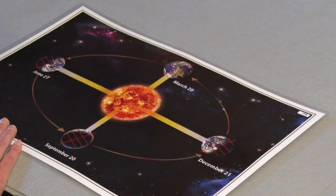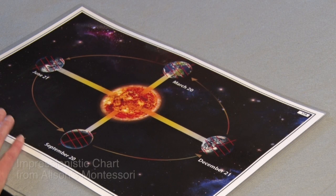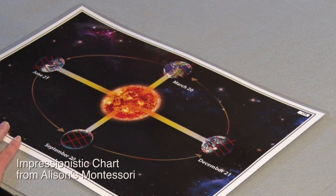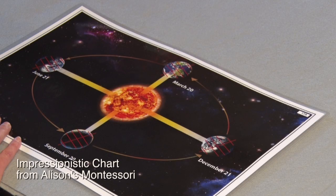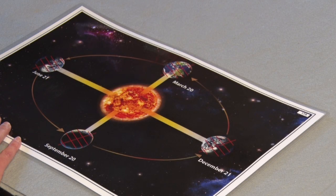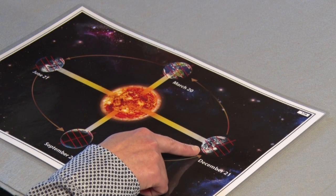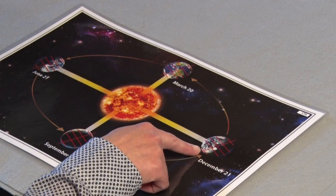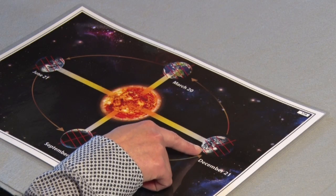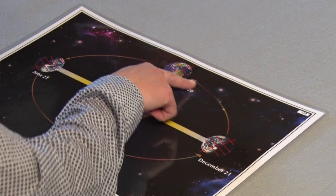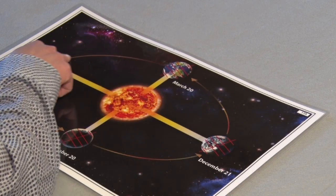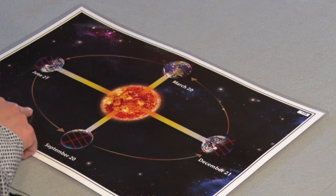Here is a representation using a chart that goes along with the model of the Earth and the Sun that we just looked at. This shows the tilt of the Earth on its axis as it rotates around the Sun.